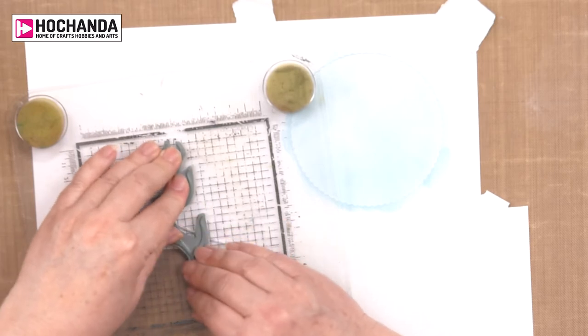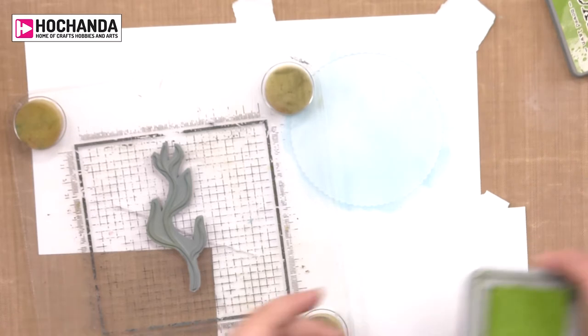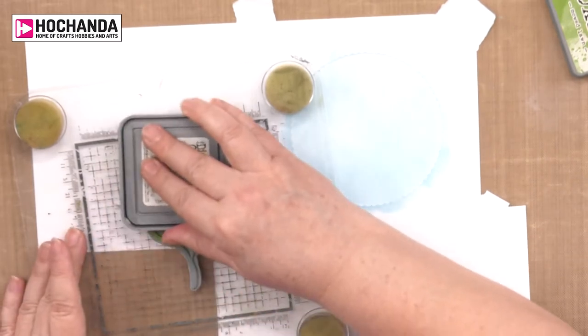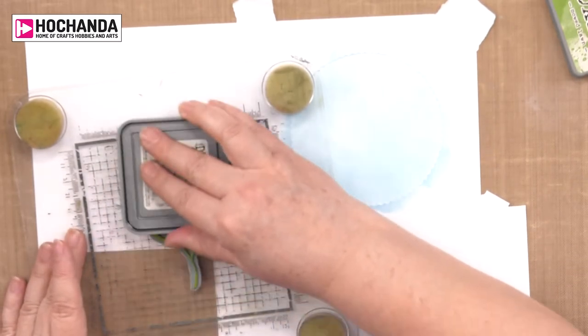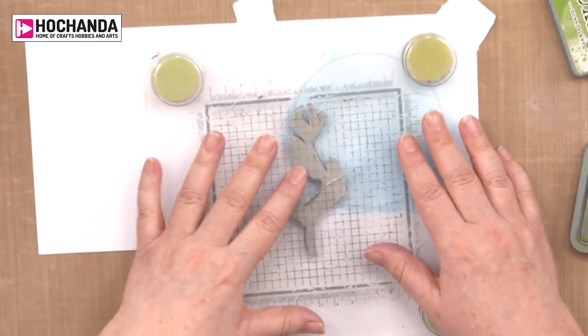Put my seaweed on and grab one of my green distress oxides. This is mowed lawn, quite a bright green, and we're going to stamp over the die cut.